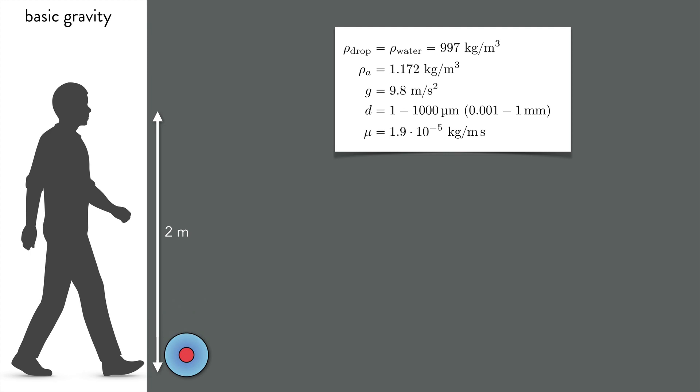Shown here are several constants that may be important to us. We have ρ_drop, the density of the droplet; ρ_a, the density of the ambient air; g for gravity; and d, a range of droplet diameters ranging from 1 to 1000 micrometers. Later, we'll also need the viscosity of air, μ.